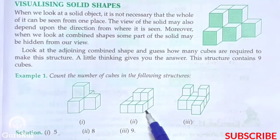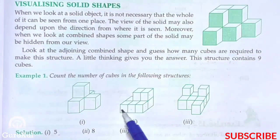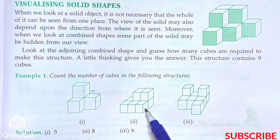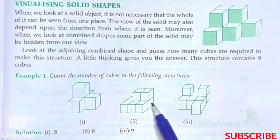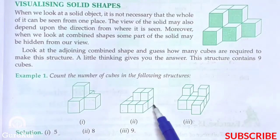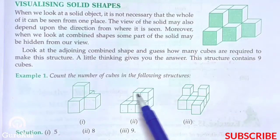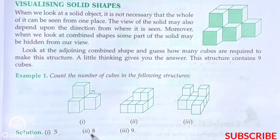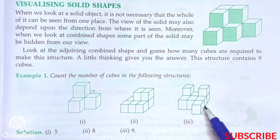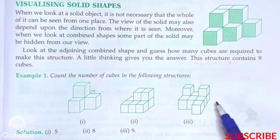Now look at the second structure here: 1, 2, 3 on one side, and 1, 2 on the other — so 3 twos are 6, then 7, 8. The answer is 8.